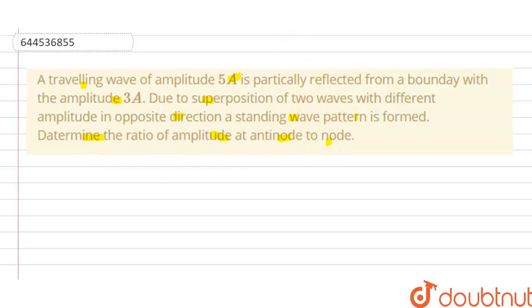So we have to determine the ratio of amplitude at antinode to the node. The solution of this question is: firstly we know that the amplitude of incident wave is given to us 5A, and the amplitude of the reflected wave is 3A.